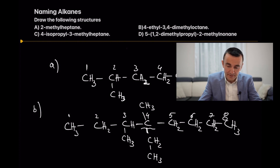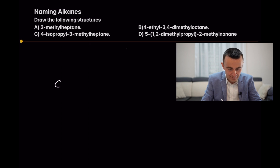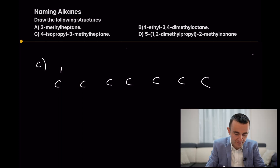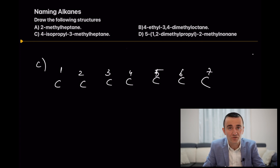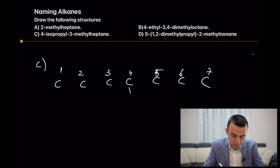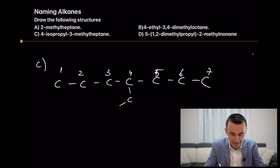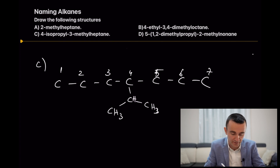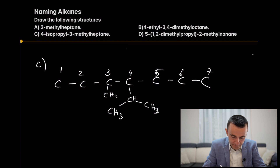For point C, we have 4-isopropyl-3-methylheptane. Heptane is seven carbons — draw and number them. At position four, connect an isopropyl group: a carbon bonded to two methyl groups and one hydrogen. At position three, add a methyl group. Fill all positions with hydrogens to complete four bonds per carbon.